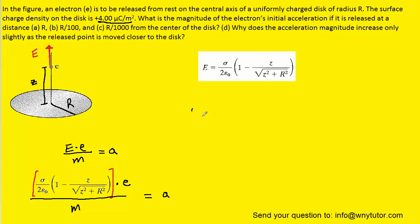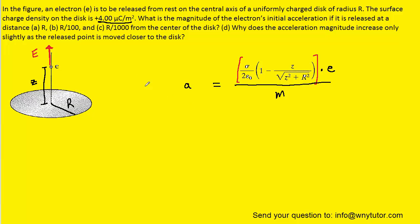Let's examine part A, which tells us the electron is released at a distance of R. Referring back to the diagram, the distance from the electron to the center of the disk — which is Z — is given as R for part A. So we substitute R in for Z in both places in the equation.